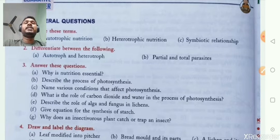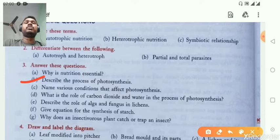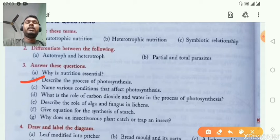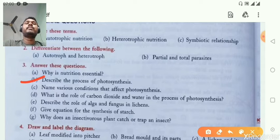The second question is to describe the process of photosynthesis. Photosynthesis is the process of conversion of solar energy into chemical energy by green plants.